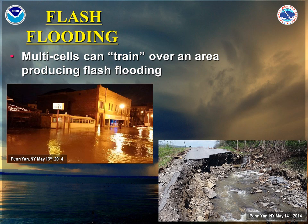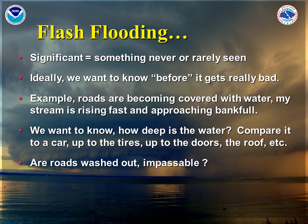Here's an example from Penn Yan from May of 2014. Notice how the water was so strong that it actually scoured away a portion of road. So what defines flash flooding? Flash flooding is significant — something which is rarely seen. For instance, if you see flooding under an underpass in an area where the road dips down and often collects water whenever it rains hard, this isn't actually flash flooding. This is basically just urban or nuisance-type flooding. Another example could be storm drains clogging up with leaves, which also causes nuisance flooding of roadways.